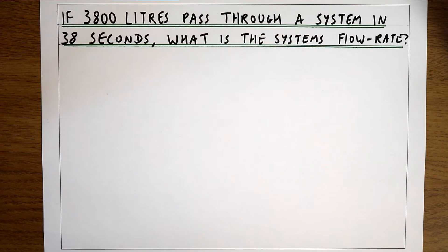In this example we're asking if 3,800 litres pass through a system in 38 seconds what is the system's flow rate or discharge?